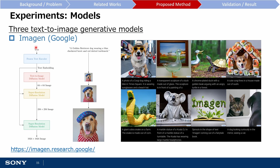The second model to introduce is Imagen, created by Google. Briefly, a caption is input into a text encoder to produce a text embedding. The text embedding is then used as a conditioning signal to the diffusion model. The output of the diffusion model is then up-sampled by two consecutive super-resolution models to produce the final high-quality images, as you can see on the right.